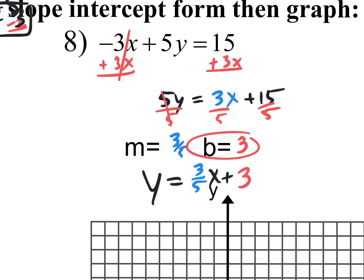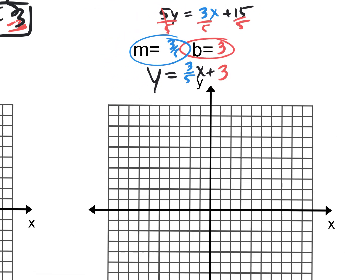You begin with the b value, the y-intercept of 3 — go to 1, 2, 3 on the y-axis, put a dot there. Then from there, rise and run according to your slope: go up 3 — 1, 2, 3 — over 5 — 1, 2, 3, 4, 5 — put a dot right there. You could draw a line right through it and put some arrows on it. To extend it in the other direction, use that pattern backwards — over 5 to the left, down 3 — 1, 2, 3, 4, 5 over, down 1, 2, 3 — and extend the line in that direction.